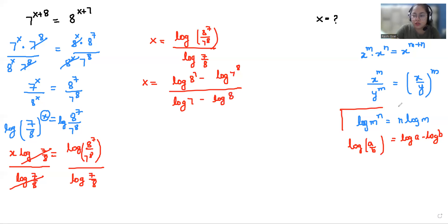So again I'm using this formula: log(M^N) = N·log(M). So here power is 7 and here power is 8. So we can write x = (7·log(8) - 8·log(7)) / (log(7) - log(8)).